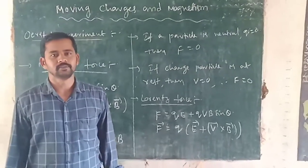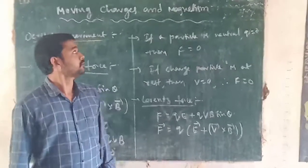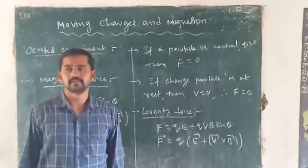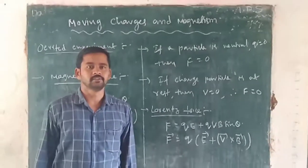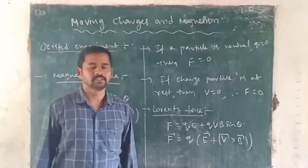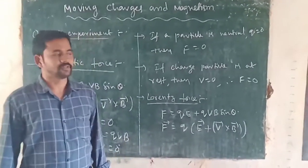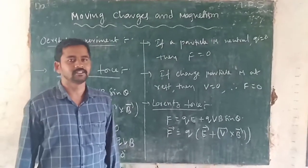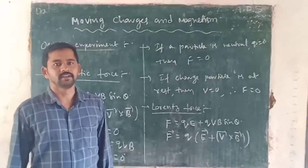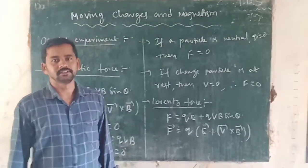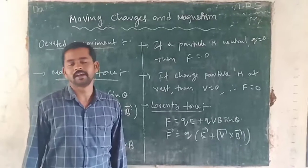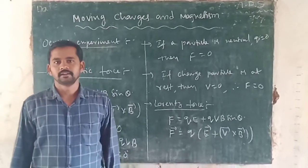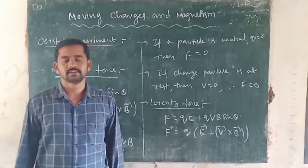Current electricity also we covered. Now, the fourth lesson is moving charges and magnetism. In the first two lessons, we discussed when the charge is at rest. Whenever the charge is at rest, you observe electric field and electric potential — that concept we discussed.